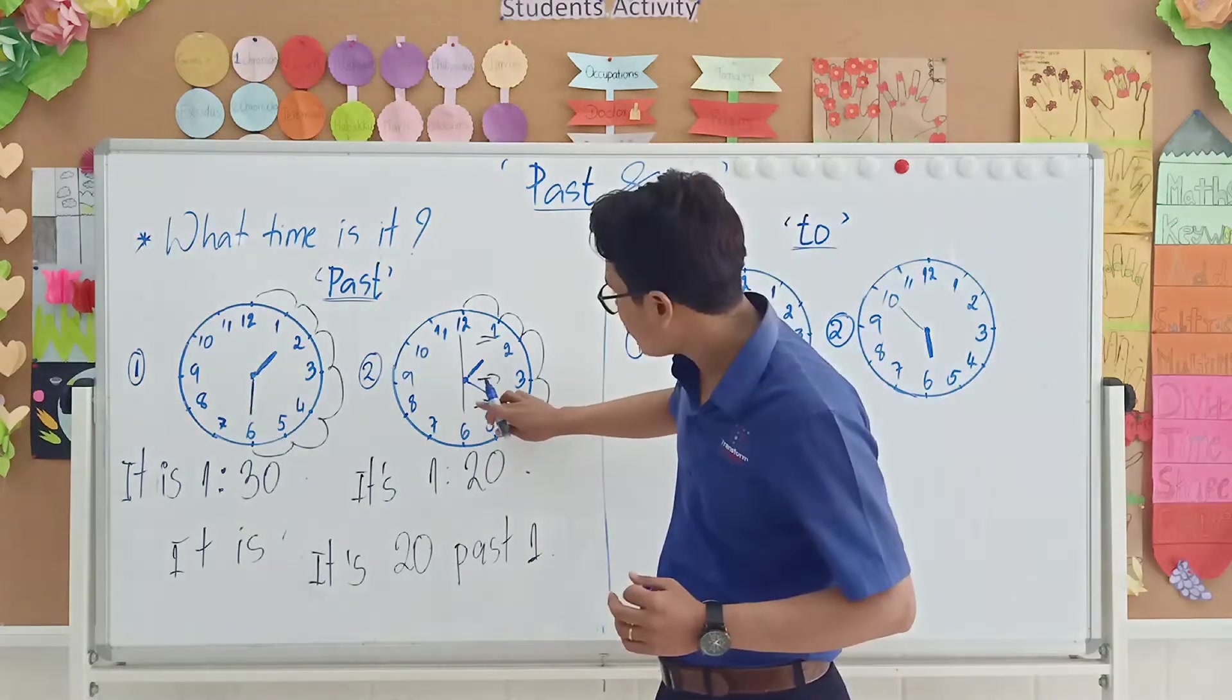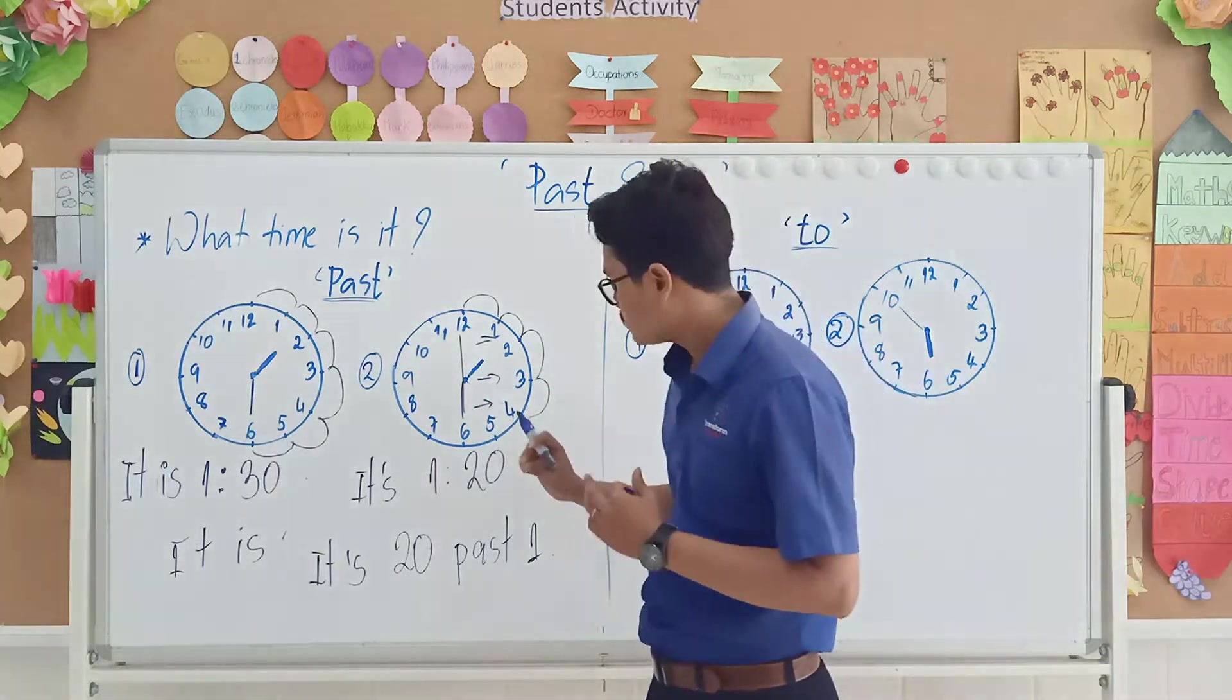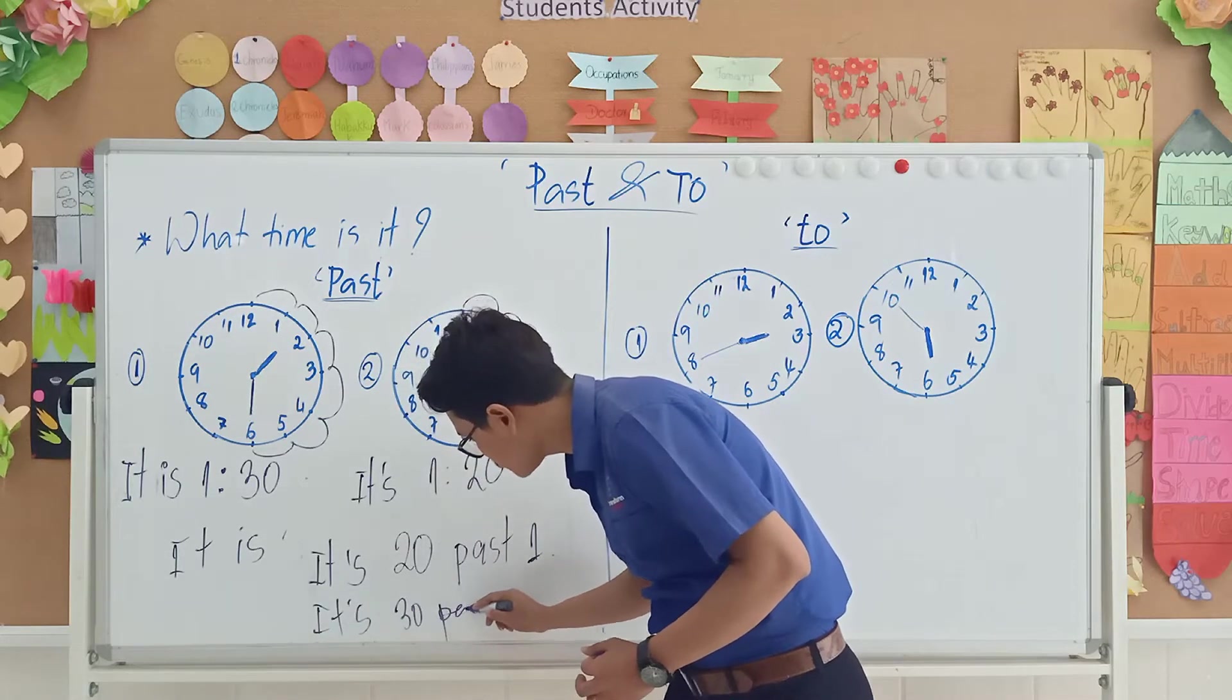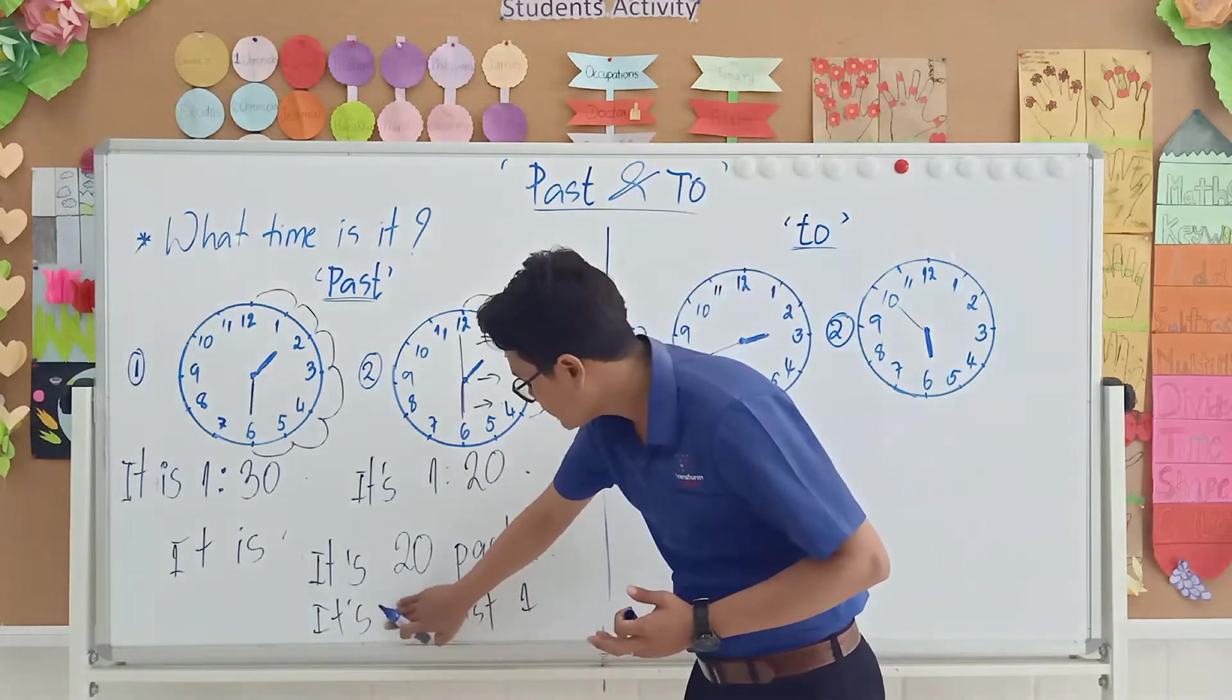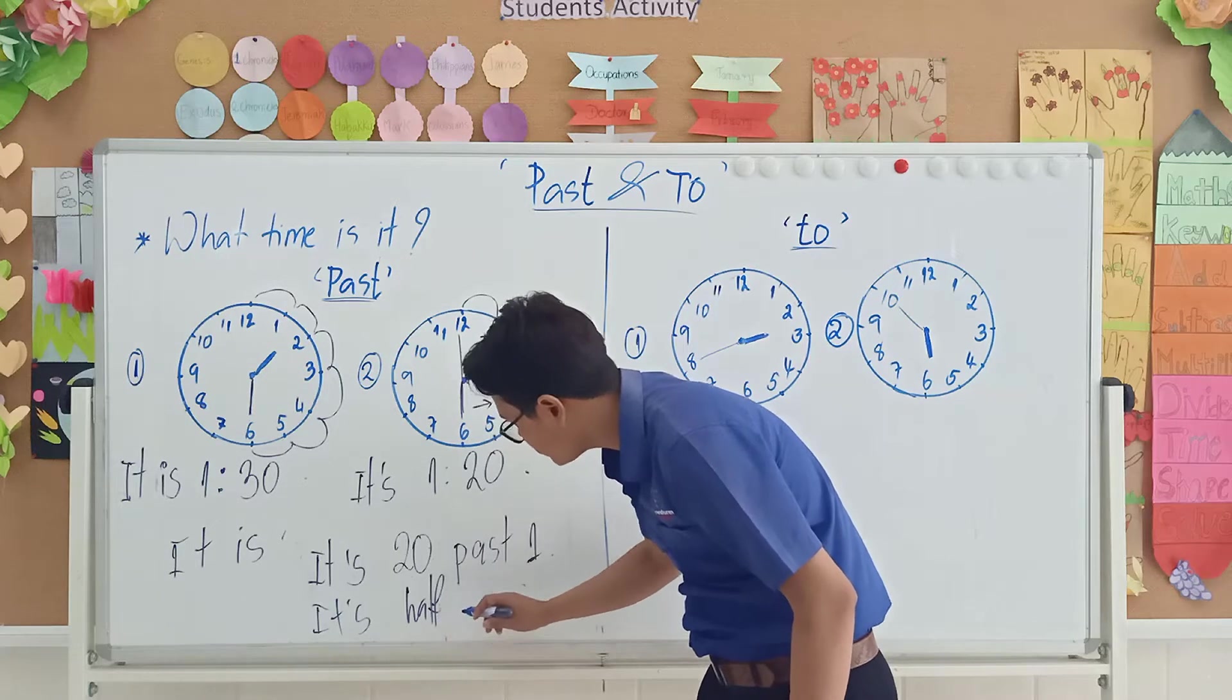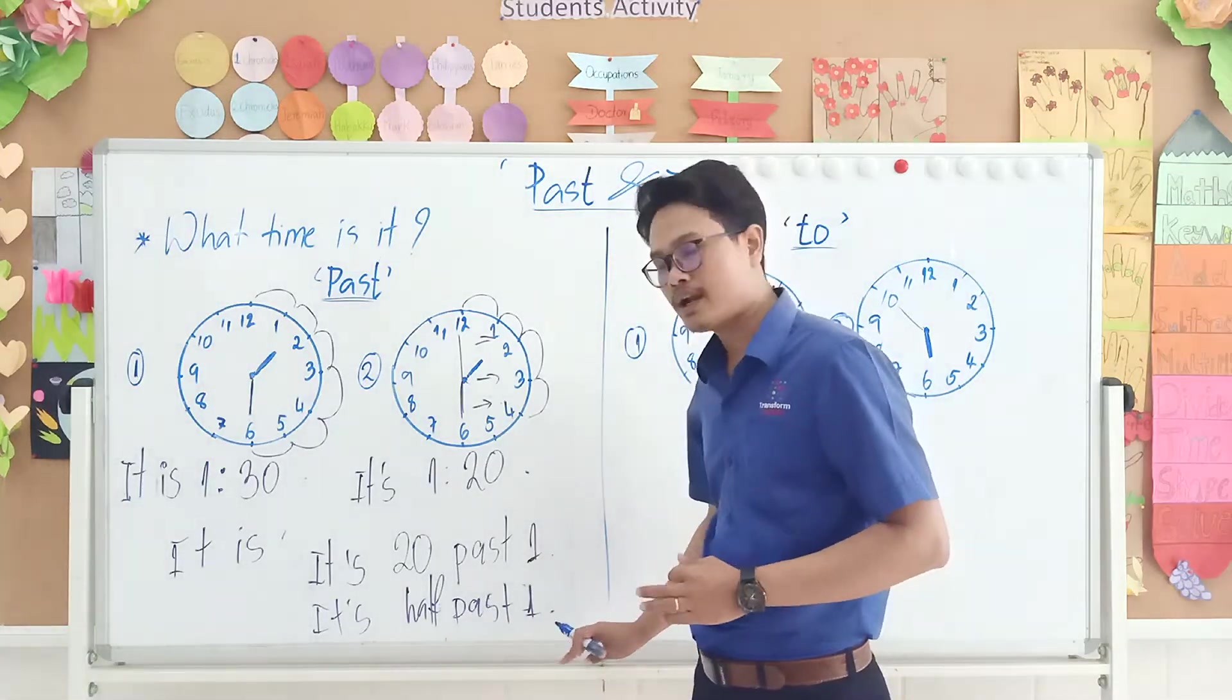But when you see the long hand at some point, you see the long hand like this move past number 6, you cannot say it is 30 minutes past 5 or 1, you cannot say that. You say it is quarter past 1. Understand?